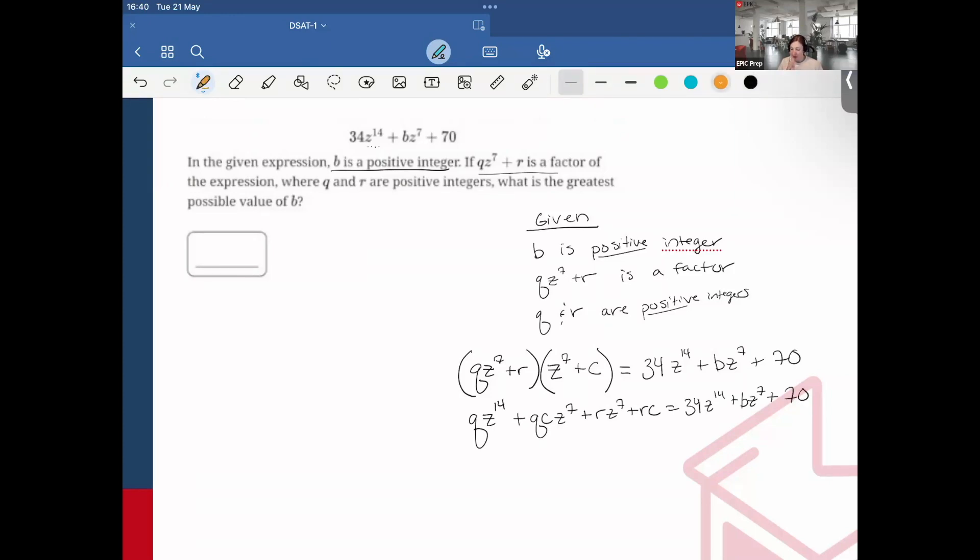Now look at the coefficients. I have z^14 here, so therefore q equals 34. Next, I need to factor here. Each of these have z^7 in them, so that would be z^7 times (qc + r). I can see that's what b equals. So b = qc + r. And my final part, rc, must equal 70.